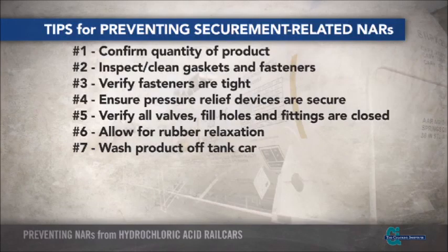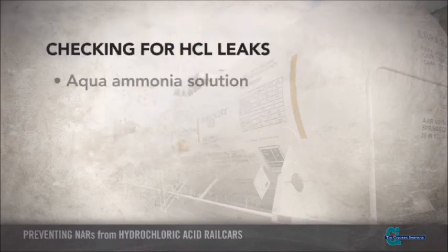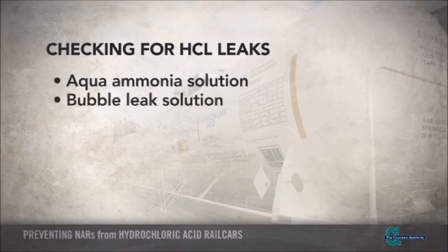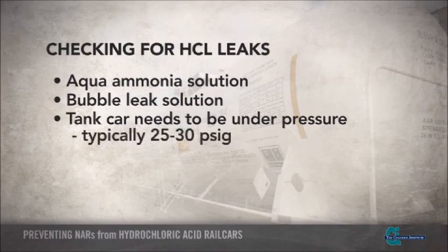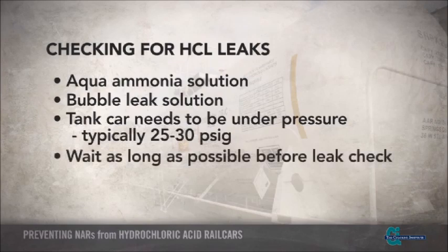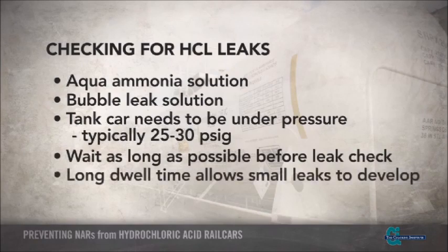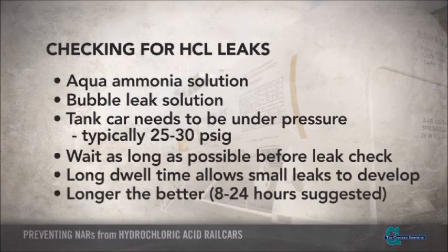A crucial step in the securement process is to check all fittings for leaks prior to shipment. For hydrochloric acid tank cars, commonly used methods are the use of aqua ammonia solution or bubble leak solution to detect any leaks. Both of these leak test methods require the car to be under pressure, typically 25 to 30 PSIG, to be effective in detecting leaks. One general tip for leak checking is to wait as long as possible before doing a final leak check prior to the rail car being offered for shipment. A long dwell time will allow very small leaks to develop and become detectable — the longer the dwell time, the better. Some shippers let the car sit up to 24 hours prior to shipment.